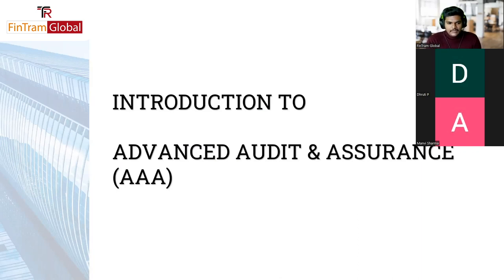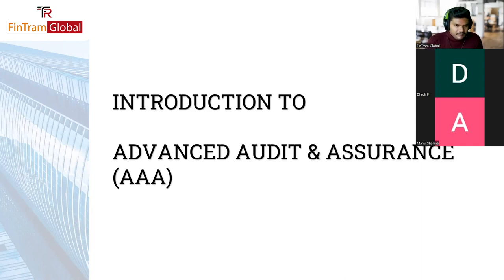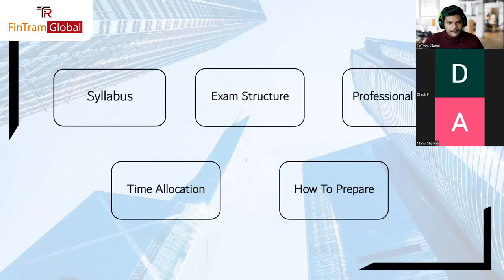The Triple A paper is basically the advanced version of its predecessor, the Audit and Assurance or Double A paper from the skills level. Looking at the syllabus content, I would say it's around 60% of what you may have learned in SBR or Strategic Business Leader exam, 20% new audit and assurance related content, and the remaining 20% is what you may have already learned in the Double A paper.